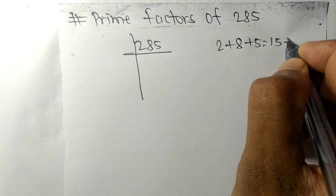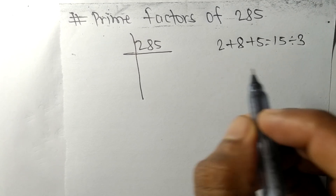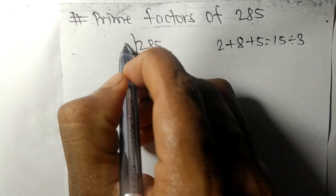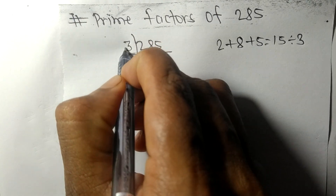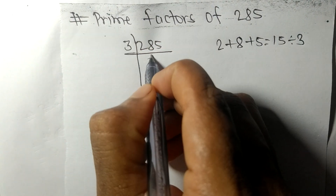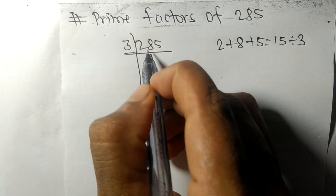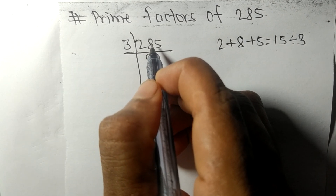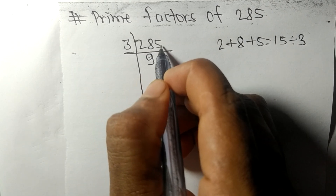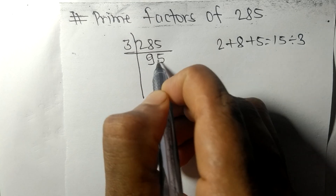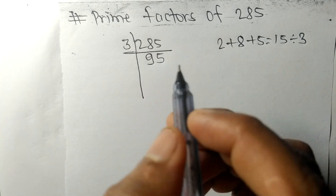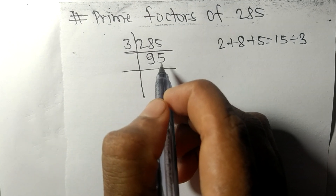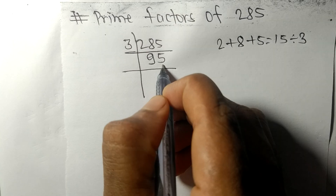15 is exactly divisible by 3, so 285 is also divisible by 3. Dividing: 3 times 9 is 27, remainder 1; bring down 15, and 3 times 5 is 15. So now we get 95.